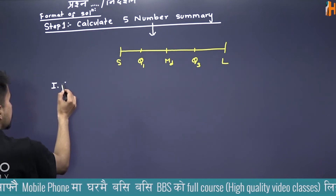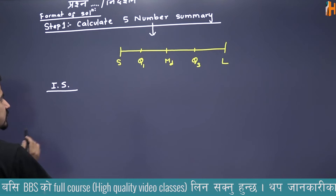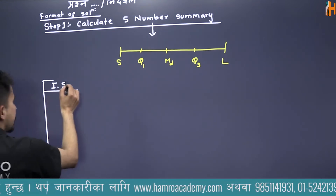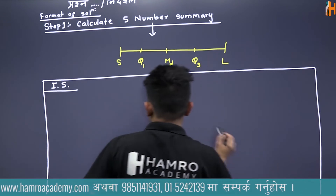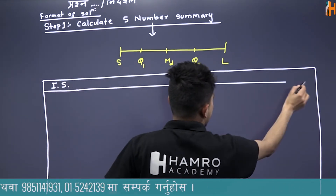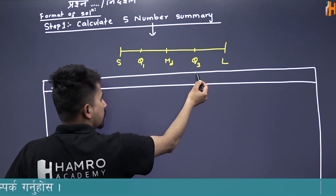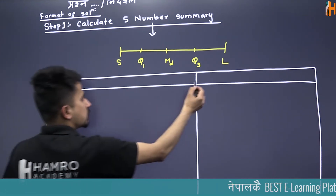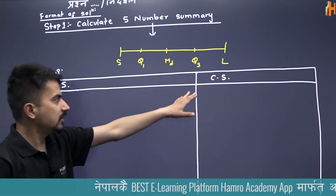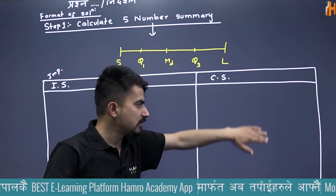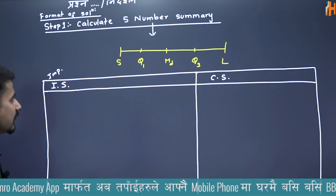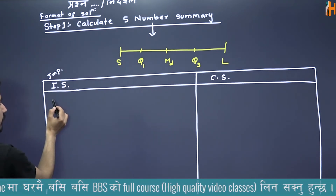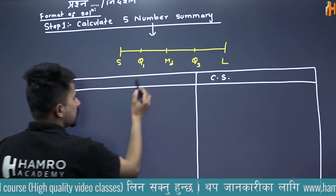Same 5 number summary — if the question has individual series, then the individual series questions will be discussed. If you are going to study this, you can write this. The individual series is important, and the continuous series is going to be done as well. Q1 and the median and Q3 — these are the first focus.